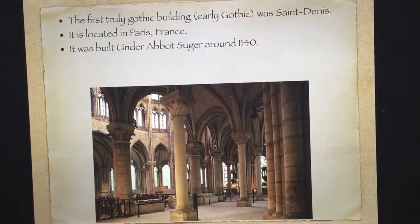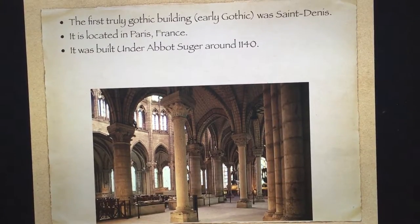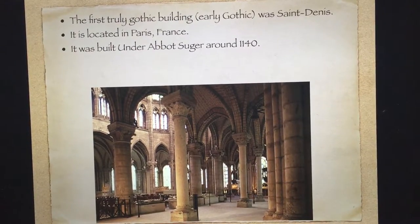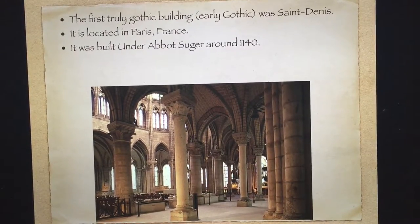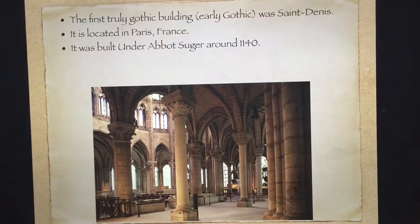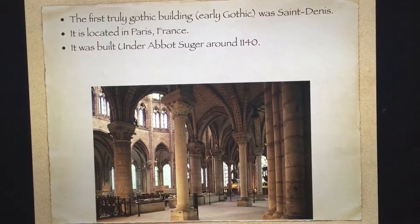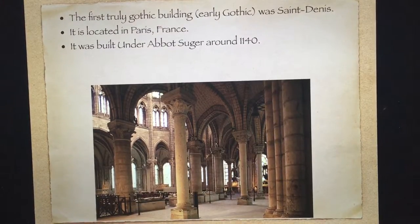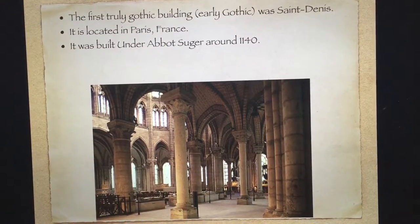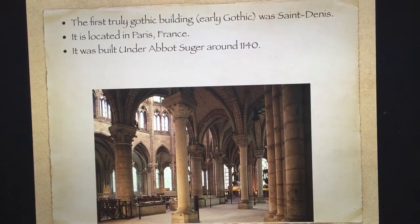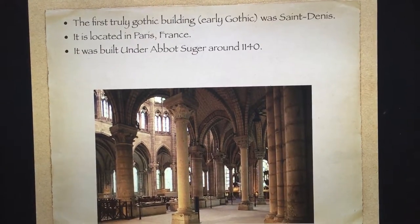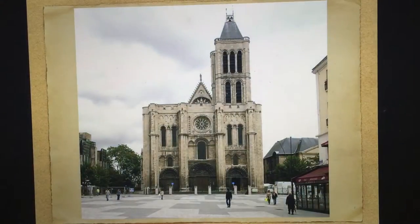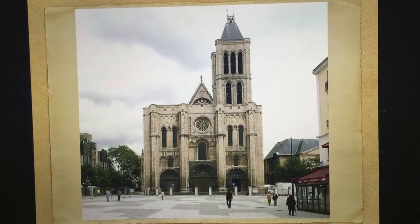The first truly Gothic building — early Gothic — was St. Denis. It is located in Paris, France. It was built under Abbot Suger around 1140.